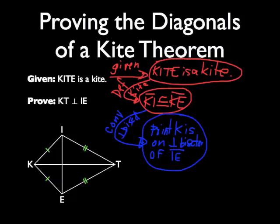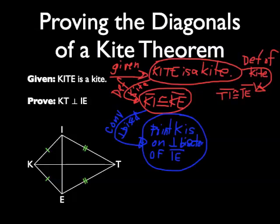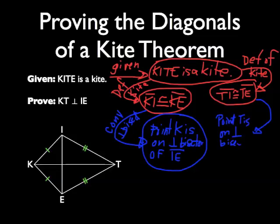So now I'm going to go back and use the definition of a kite again on the other pair of congruent consecutive sides. So by using the definition of a kite, I can now say that segment TI is congruent to segment TE. And likewise, using the converse of the perpendicular bisector theorem, I can now say that point T is on the perpendicular bisector of segment IE.